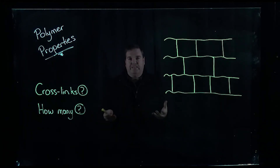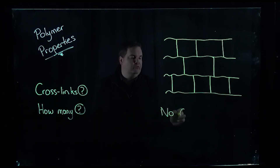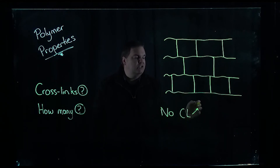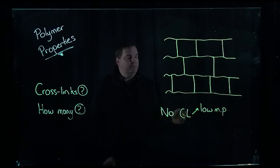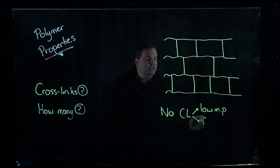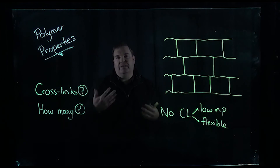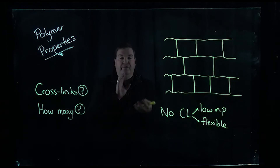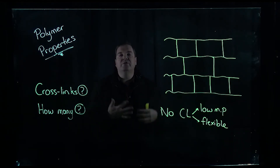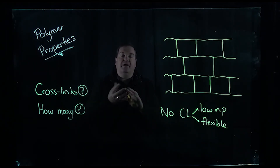When you've got no cross links, generally what that means is you have a low melting point because the chains are easily separated from each other, and you've also got something that's generally pretty flexible. Consider plastics like cling wrap or plastic bags — those sorts of things which melt pretty easily and are flexible and stretchy. Those are examples of polymers that have very little cross linking, so they are quite flexible.